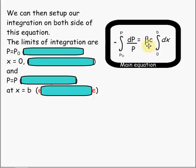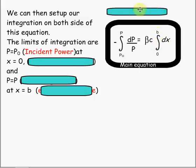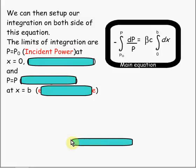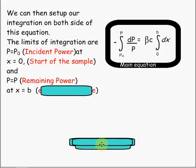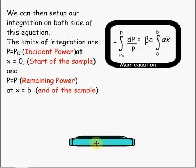We put the negative sign on the outside of our integrand. We have the constant of proportionality and the concentration outside of our integration for our path length over the range from zero to b dx. We can see that P-naught is our incident power, x equals zero is the start of our sample, P equals P is the remaining power, and x equals b is the end of our sample.